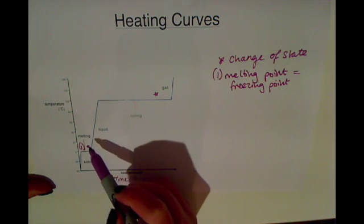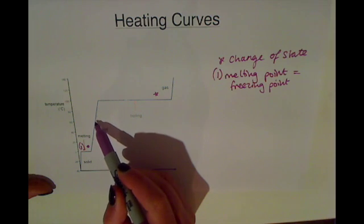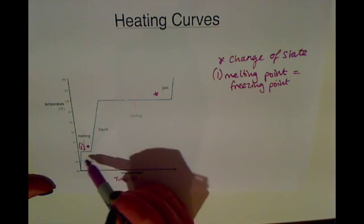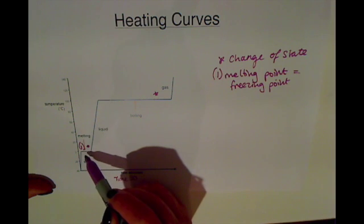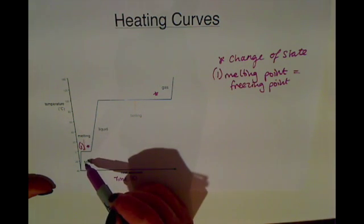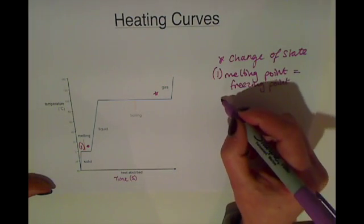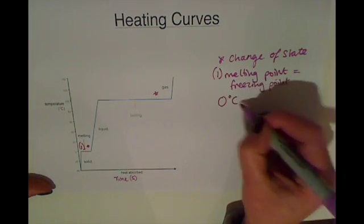On the opposite way around, if you're cooling something down it will turn from a liquid into a solid and therefore it will be its freezing point. So the melting point and the freezing point are at the same temperature. And for water this is around zero degrees C.